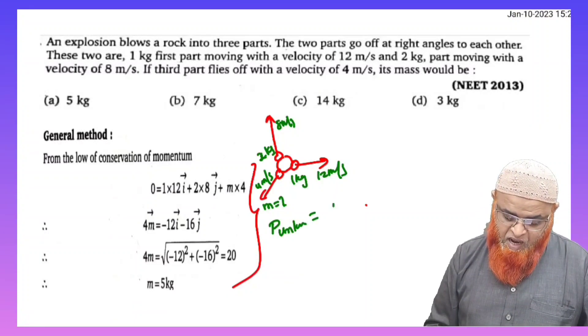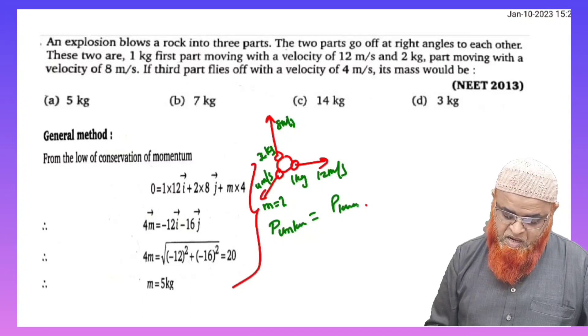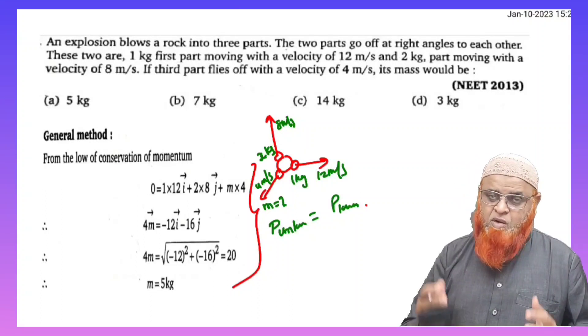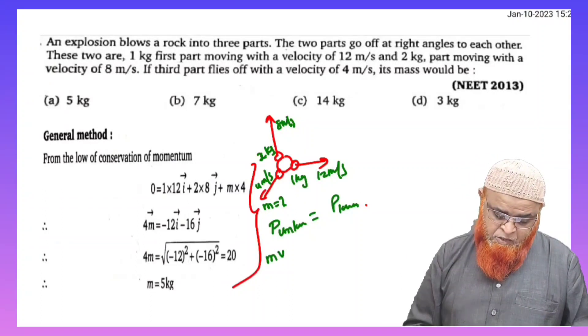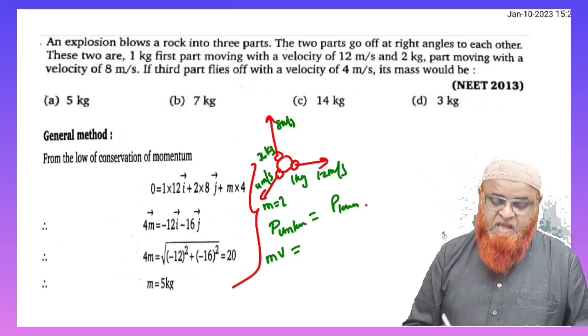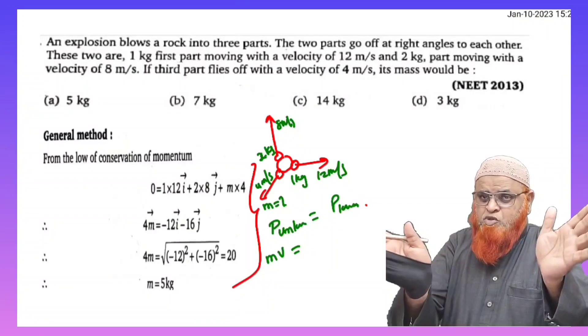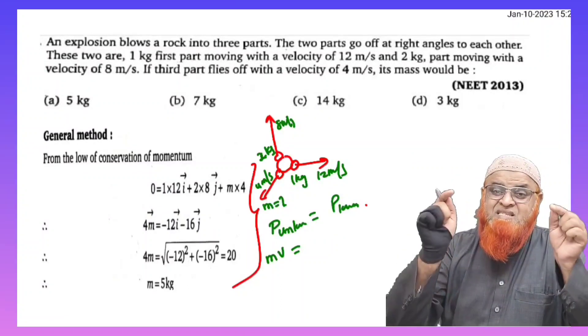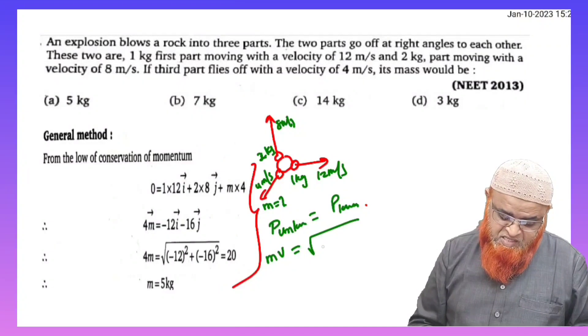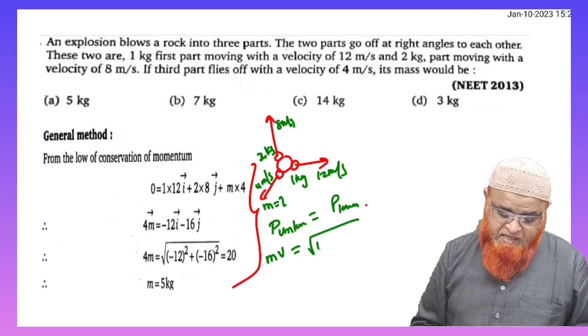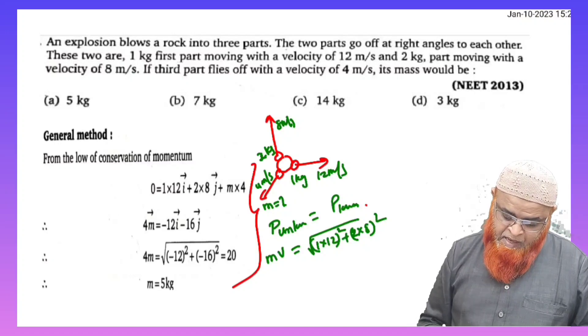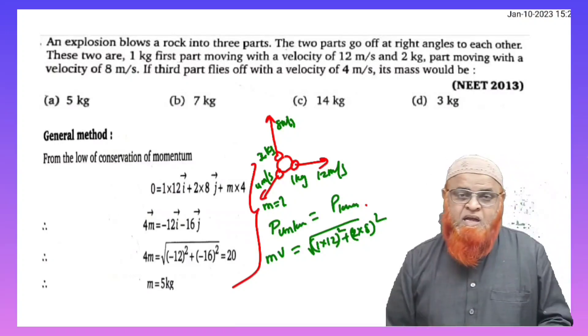Momentum of unknown body is equal to momentum of known bodies whose values are known to us. So unknown means the third block whose mass is not known to us. So mass into velocity of the unknown block is equal to, as the two blocks are moving mutually perpendicular to each other, you can just apply the Pythagorean theorem because you all know that momentum is a vector. So you can just write m1v1 square, that is nothing but 1 into 12 whole square plus 2 into 8 whole square.